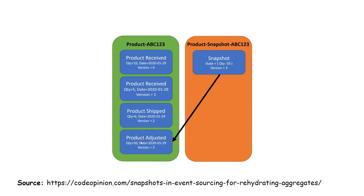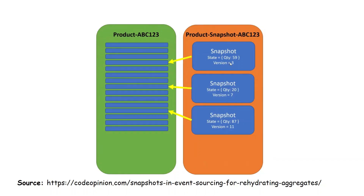in a separate store, so every time we want to query the current state we don't have to iterate or replay all the events. We can find that from the product snapshot, and we can also have multiple snapshots for different intervals of our event store.